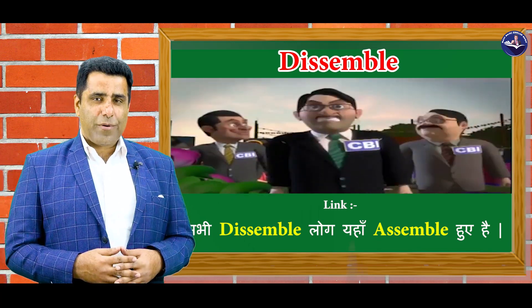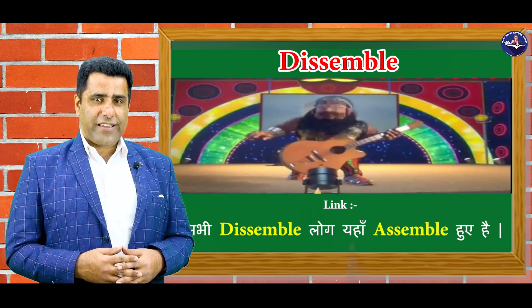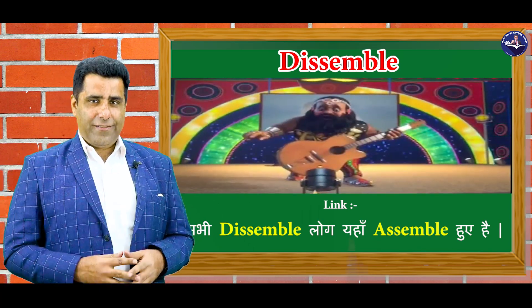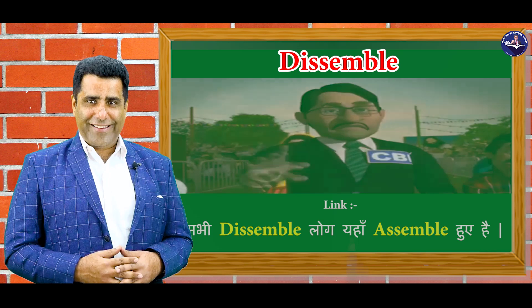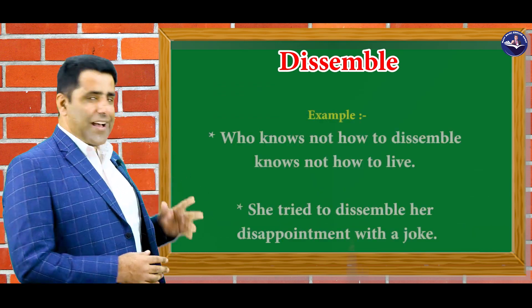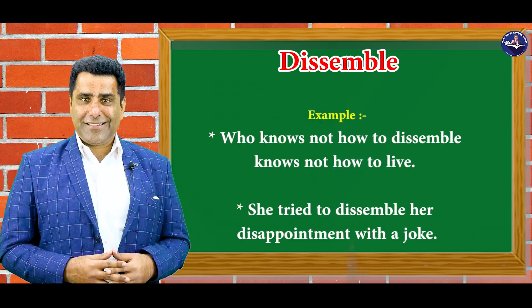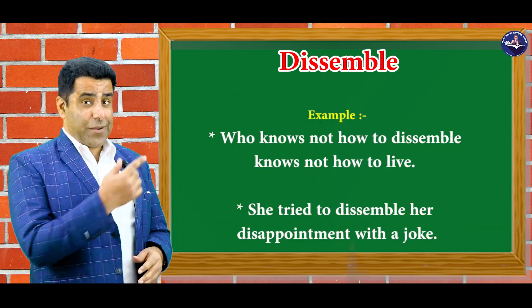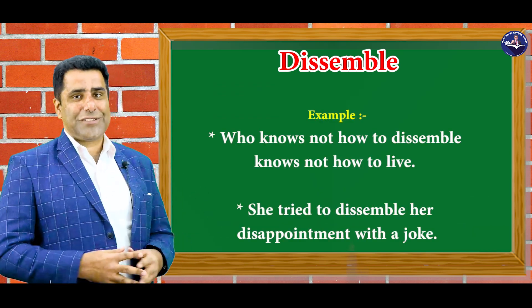Main janta hoon, aap humari aisi picture dekhke bahut haste hain, aur hasna zaruri hai na. Toh ye raha iska sentence. Is tarah se hum dissemble word ko use karke.